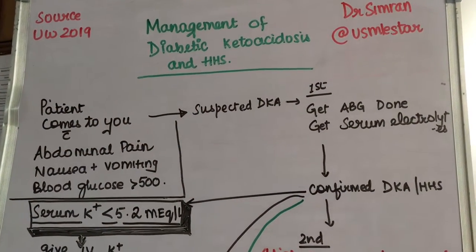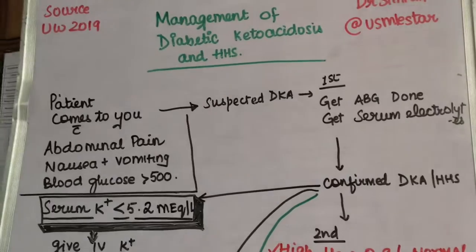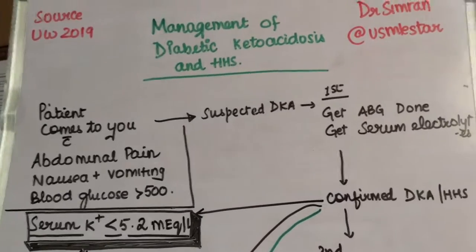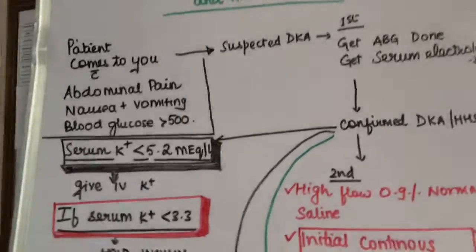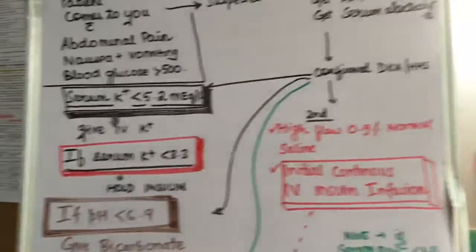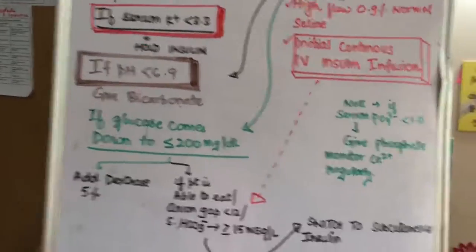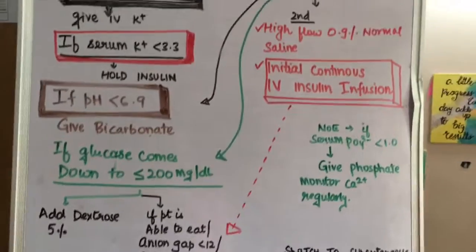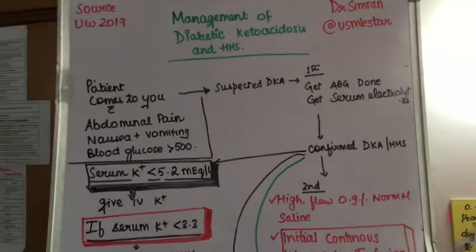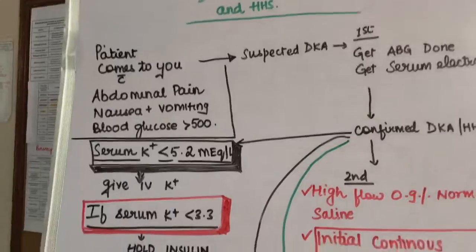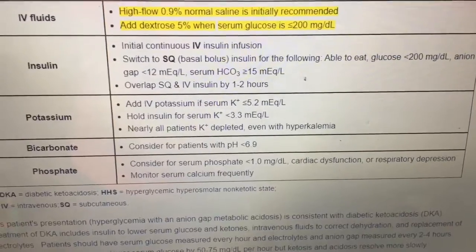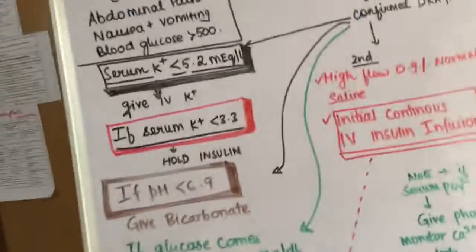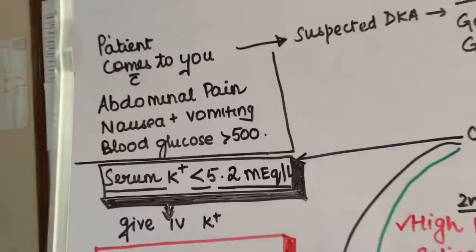In this video I'm going to explain the management of diabetic ketoacidosis and HHS. This whole algorithm has been taken from UWorld 2019 Step 2 CK edition. As you can see, I simplified this table into a good flowchart form so that it is very easy for you to remember. In UWorld it is given like this as you can see, the table is quite difficult to remember and confusing as well, so I simplified these steps for you.